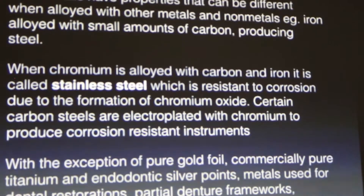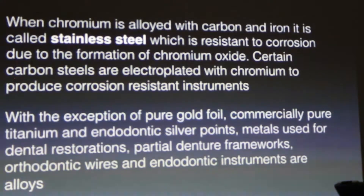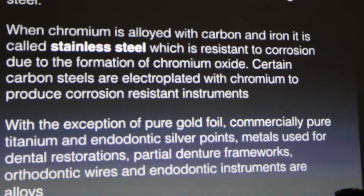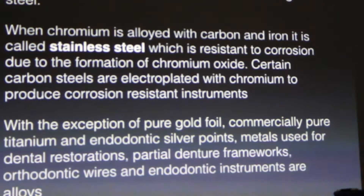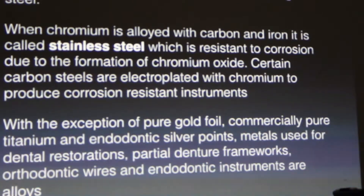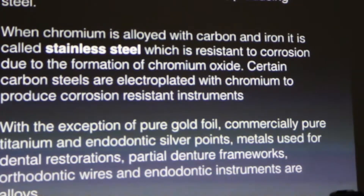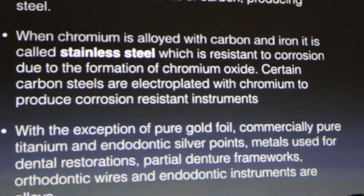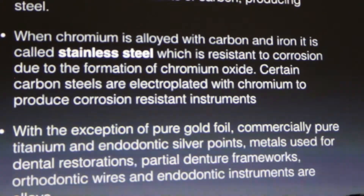With the exception of pure gold foil, commercially pure titanium, and gutta-percha silver points — silver points were once used as root canal filling materials but are no longer used today. Commercially pure titanium is what we use for implants. Other dental restorations, partial denture frameworks, orthodontic coils, and endodontic instruments are all alloys.